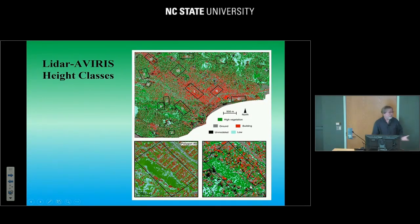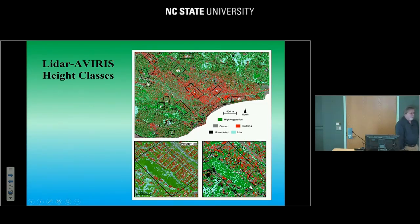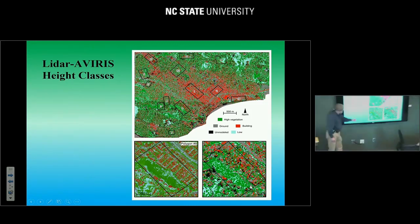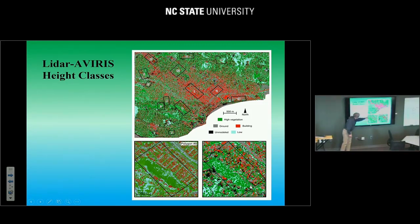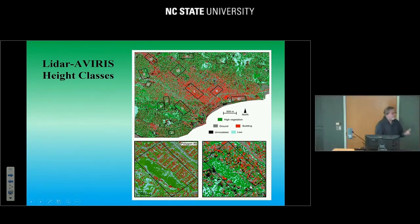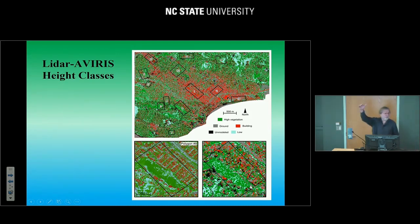We also have LiDAR, and writing a book chapter gives you a certain liberation to do things you'd never do in a journal article. We compared height classes from MESMA to LiDAR height classes. Mike Alonzo brought in his expertise, showing the LiDAR version with buildings, tall vegetation, short buildings, and ground — compared to the Avaris-derived version. I was actually blown away: we were able to discriminate different height classes with spectroscopic data, because a tree looks different than grass, and a roof looks different enough from ground to map out different classes.